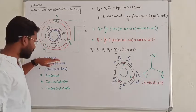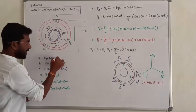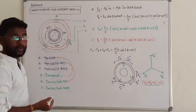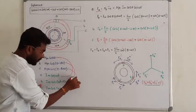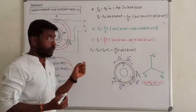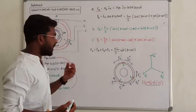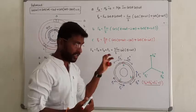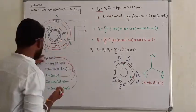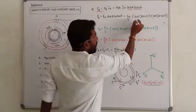Phase C carries current I_m cos(ωt − 240). Phase C has number of turns N_C. Phase B windings are displaced 120 degrees, and phase C windings are also displaced 120 degrees. This is the concept of double revolving field theory. We use the identity: cos(a)cos(b) = [cos(a+b) + cos(a−b)] / 2.